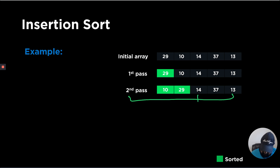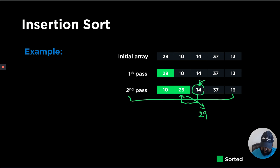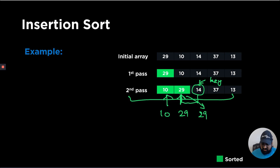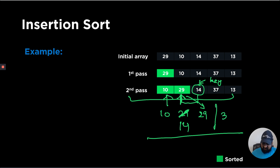Next, we compare 14 with 29. Since 14 is less than 29, we keep track of 14 in a temporary variable called key, and shift 29 to the right. We then move the pointer and check whether 14 is less than 10. Since it's not, we have found the correct position and insert 14 there. The array now looks like 10, 14, 29, with the unsorted region containing 37 and 13.